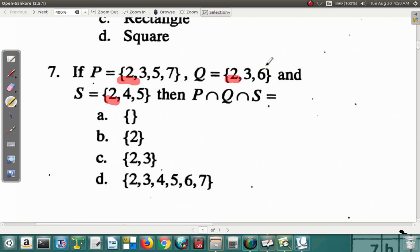I see 7 in P. There's no 7 in Q. Not in 7. 7 can't work. I see 6 in Q, but not in P. So, 6 can't work. 4 is in S, but there's no 4 in P. I don't see any 4 in Q either. So, 4 is out. So, the only thing here that works is the only element in the intersection of all 3 is 2. So, the answer is B. The answer to question 7 is B.